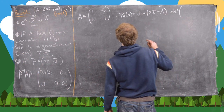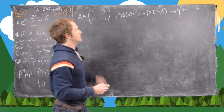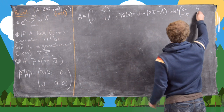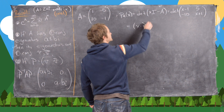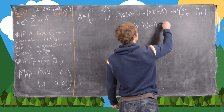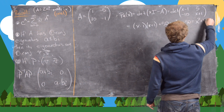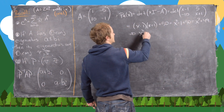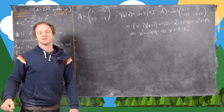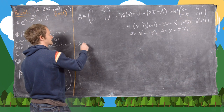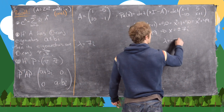That gives us the determinant of the matrix with entries (X minus 1), 5, negative 10, and (X plus 1). Using the determinant formula: (X minus 1)(X plus 1) plus 50 equals X squared minus 1 plus 50, which is X squared plus 49. This gives us X squared equals negative 49, so X equals plus or minus 7i. Our eigenvalues are complex conjugates: 7i and negative 7i.